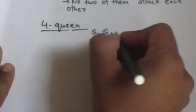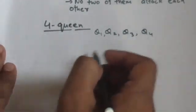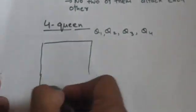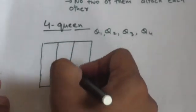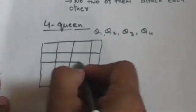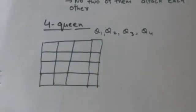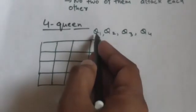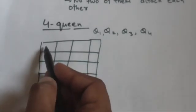In the four-queen problem, we have four queens: Q1, Q2, Q3, and Q4. We have a chess board of size four by four. We have to place all four queens on this chess board so that no two of them attack each other. In each row of this chess board we have to place one queen. First of all, we will place queen Q1 in the first row.